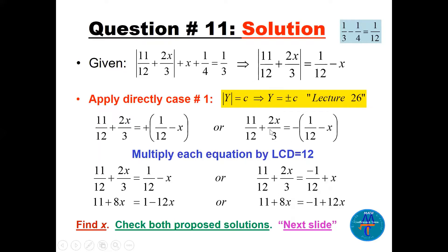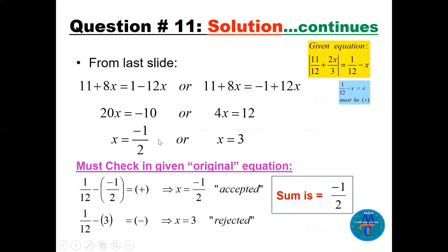We take y equal plus c or y equal minus c. We can simplify: one case gives 1/12 minus x, and the other multiplied by minus gives minus 1/12 plus x. Multiply by the LCD — all by 12 — we get the equations. Now find x and check in the original equation to make sure c is positive.